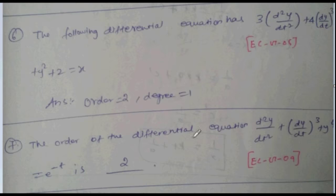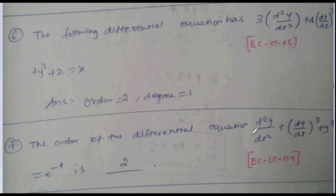Order of differential equation: d²y/dt² plus (dy/dt)³ plus y⁴ equal to eᵗ. Higher order is 2, so order is 2. This problem was from EC 2009.